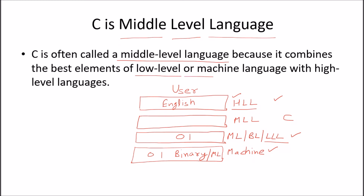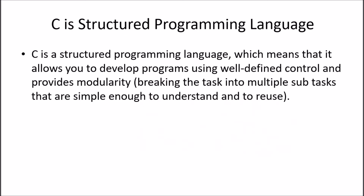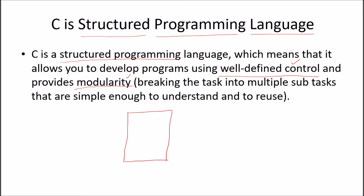C is a structured programming language. Whenever something is well-defined, controlled, and provides modularity, it is structured. C allows programs to be developed with well-defined control — meaning the user has control over their programs — and provides modularity. Modularity means a big program is divided into small parts called modules, which are essentially small functions.